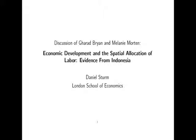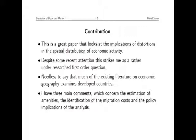This is a pretty complicated paper, so I'll try and make a few comments. I think it's a very interesting paper. It's a great paper that looks at the implications of distortions in the spatial distribution of economic activity, which is at the heart of what a lot of us worry about. While there has been some work trying to look at this in a full general equilibrium way, as Garrett has shown, there is not that much work. It's a very complicated GE problem if you really want to think about what are the losses from a spatial misallocation of resources.